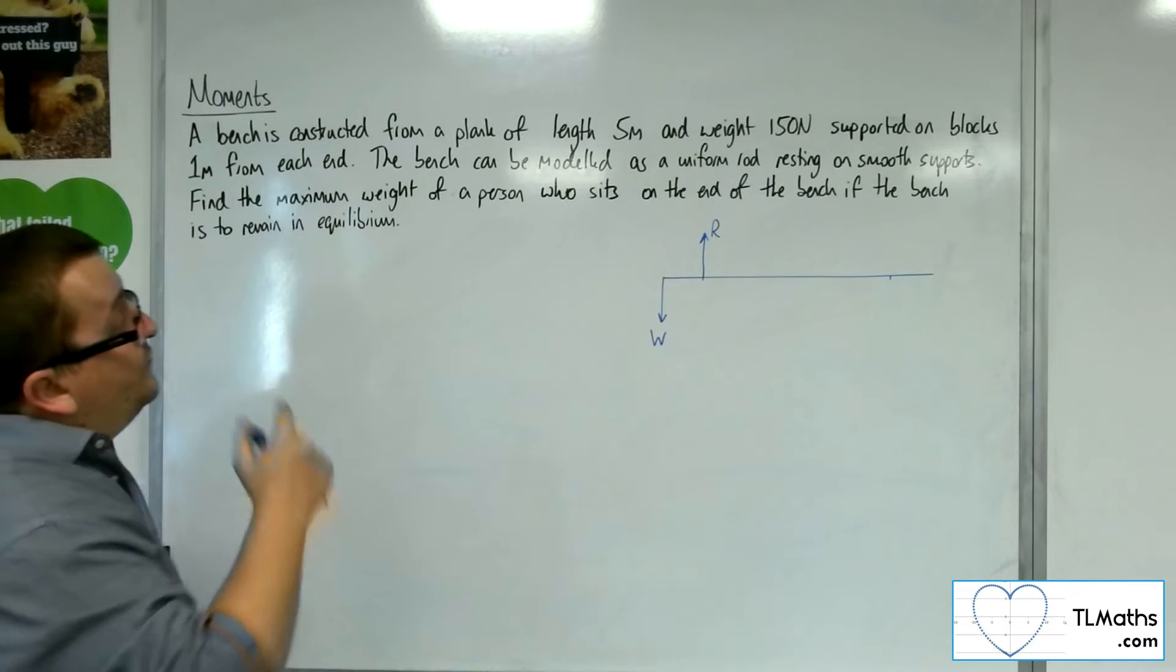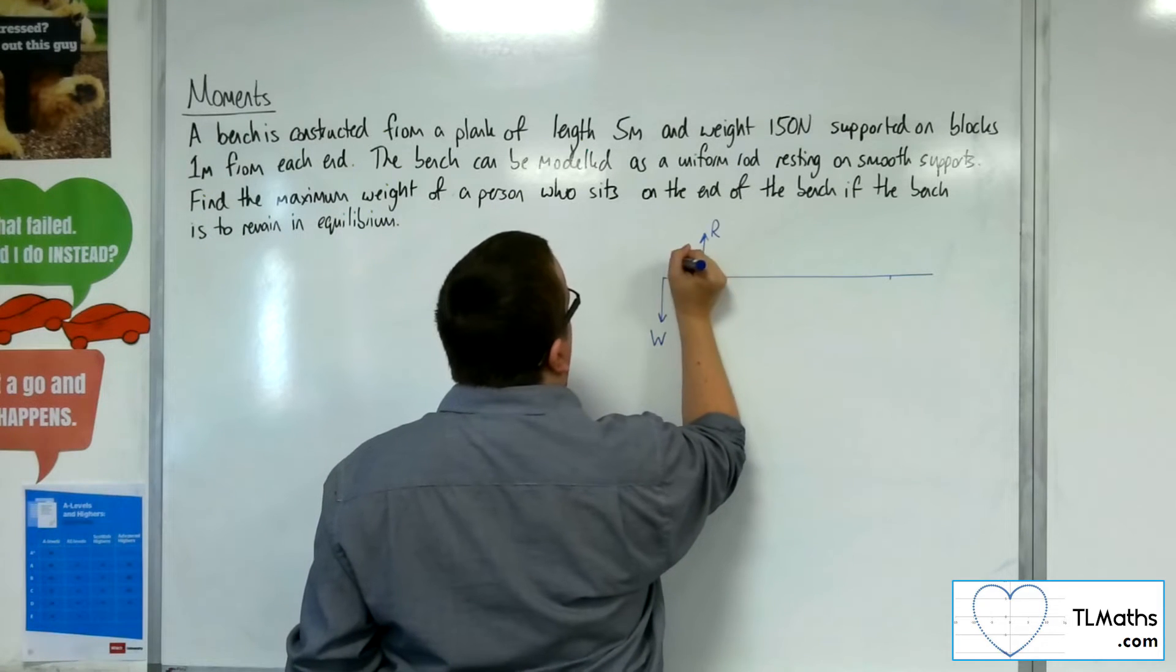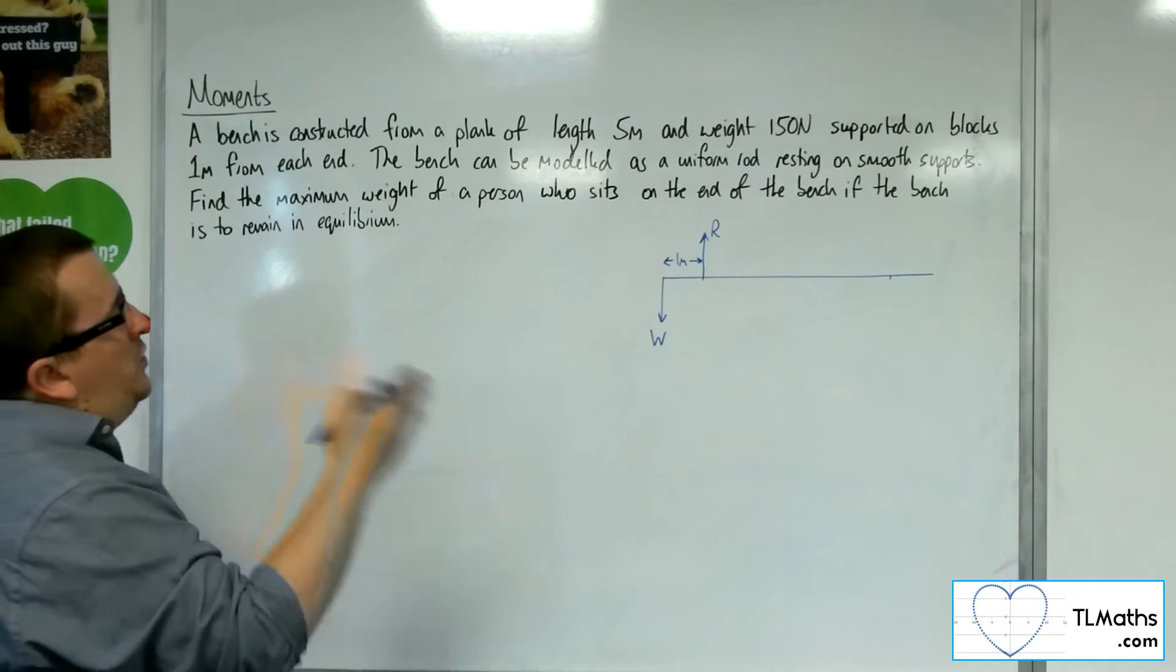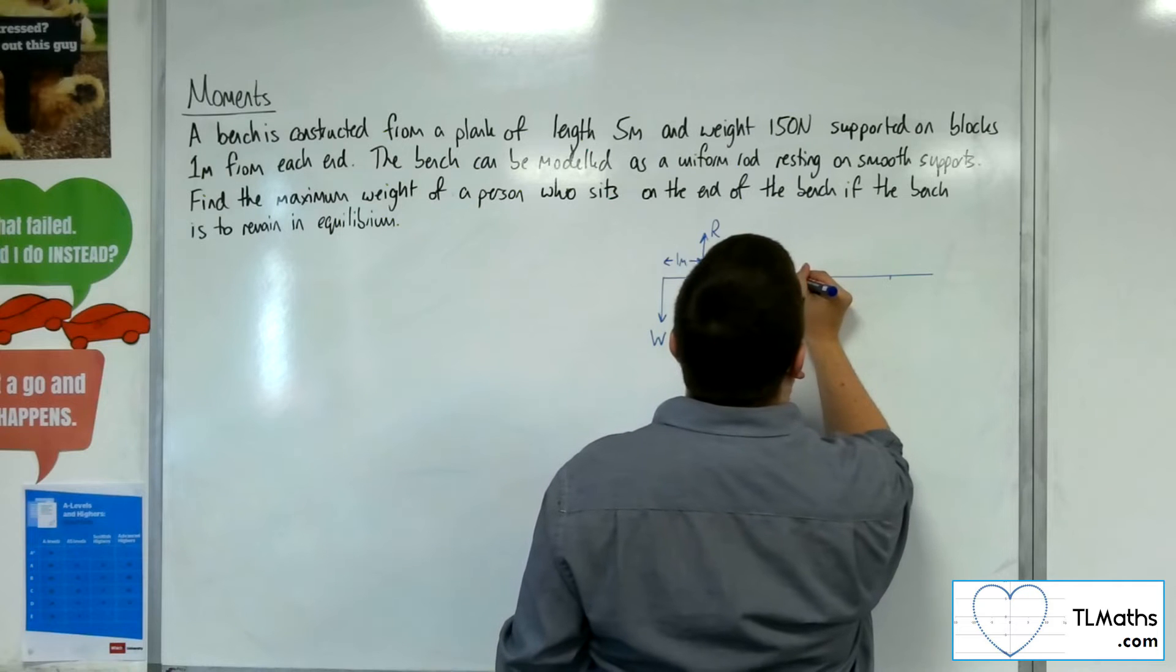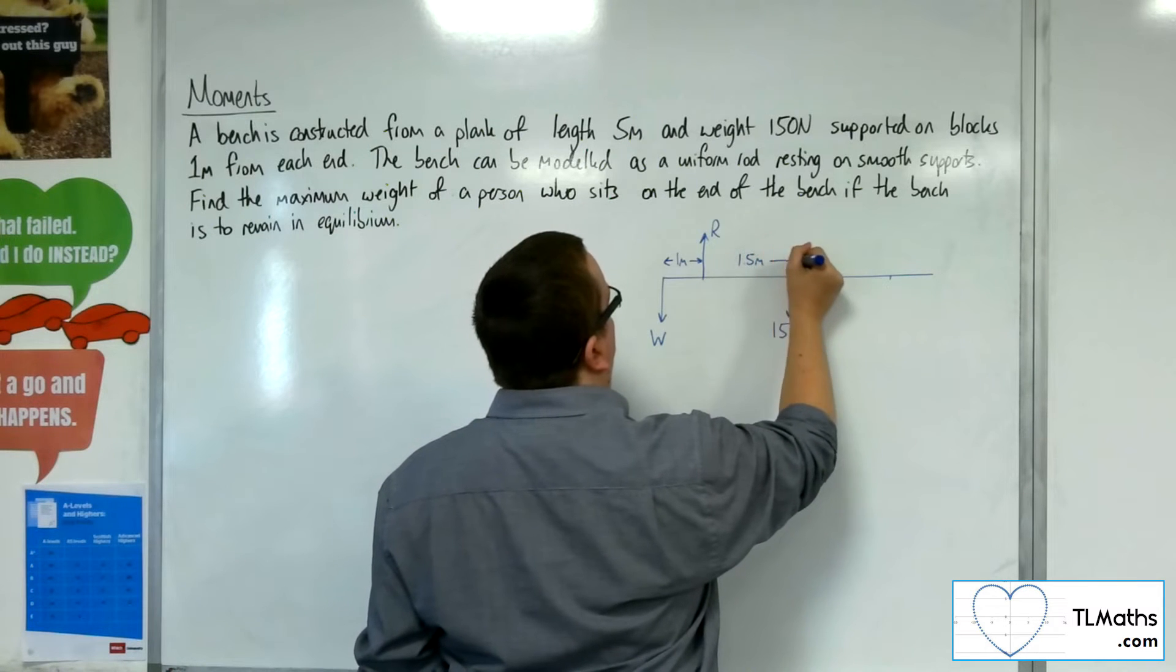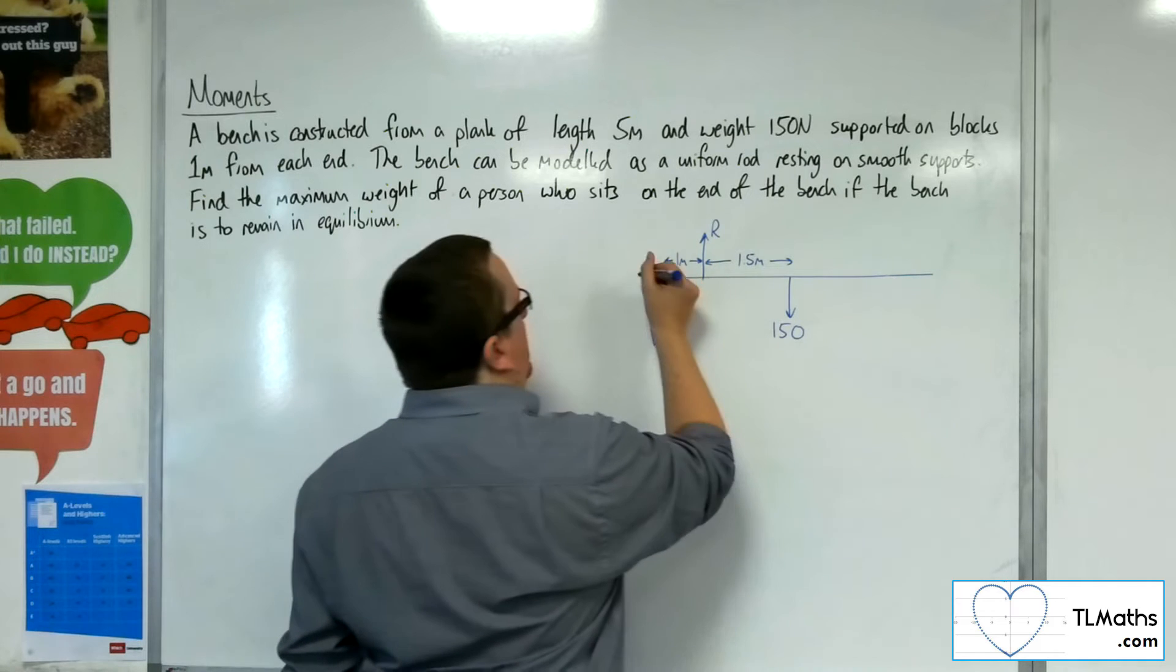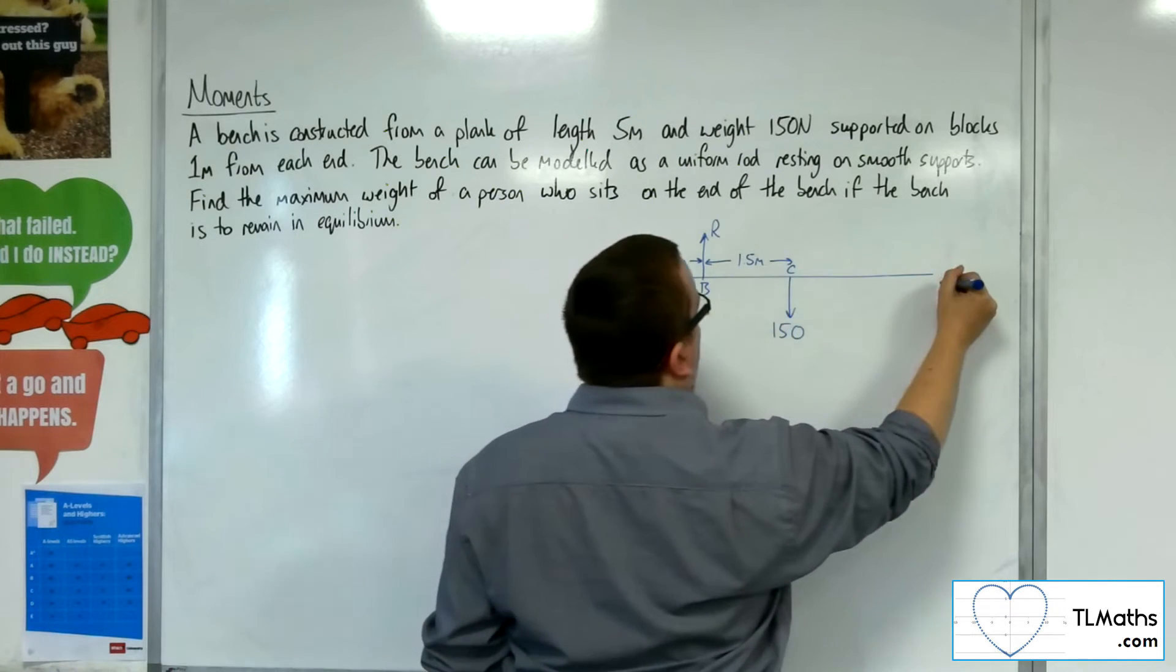It's 5 meters long. Let me put in the 1 meter there. That's 1 meter. That means it will be 2.5 meters long where its center of mass will be. So, center of mass somewhere here. And that's got a weight of 150 newtons. So, that must mean that that's 1.5 meters. So, let's call that point A, point B, let's call that point C, that point D.